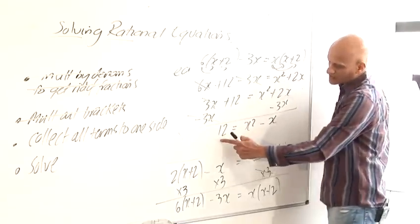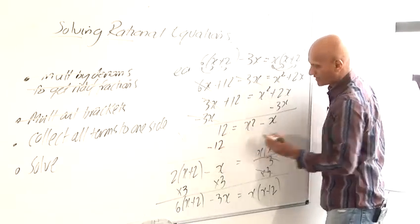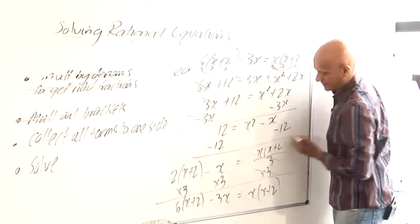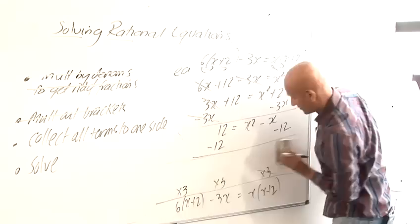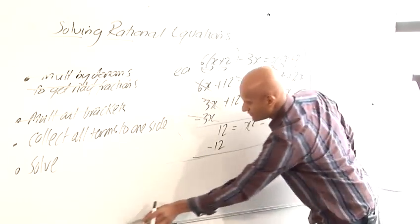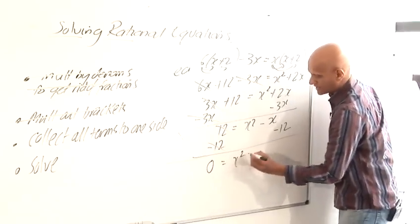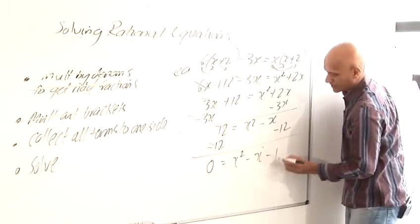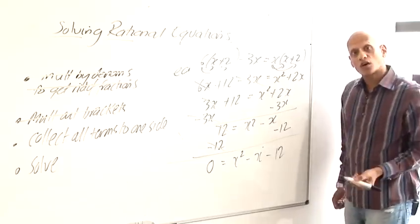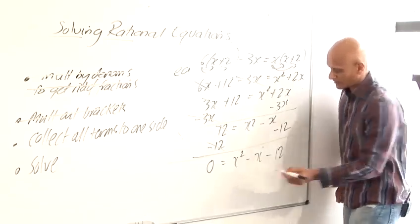And then I, again, I'm still trying to get all the terms on one side. So I'm going to minus that 12 from both sides. I'll just rub these out, make a bit more space. And the 12 and the minus 12 cancel out. So I'm left with 0 equals x squared minus x minus 12. And again, I've got a quadratic. So to solve that quadratic, I'm going to have to factorise it.